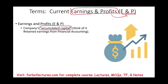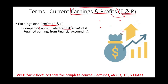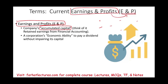In financial accounting, you generate revenues, deduct expenses, and get net income. Net income goes into retained earnings; dividends are deducted, leaving retained earnings. In taxation, earnings and profit is a different concept — it's the company's ability to pay dividends without impairing its capital. It's the economic ability to pay dividends, not simply taxable income, because there are items you receive that aren't taxable, like municipal bond interest, which still affect your dividend-paying capacity.